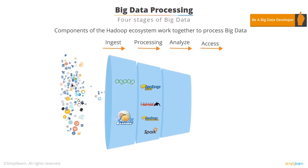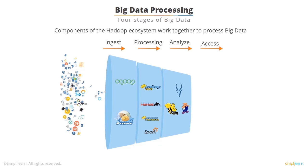The third stage is Analyze. Here, the data is analyzed by processing frameworks such as Pig, Hive, and Impala. Pig converts the data using Map and Reduce and then analyzes it. Hive is also based on Map and Reduce programming and is most suitable for structured data.